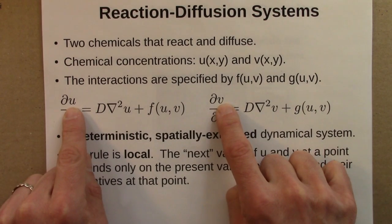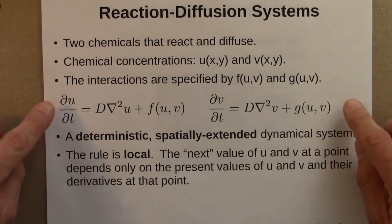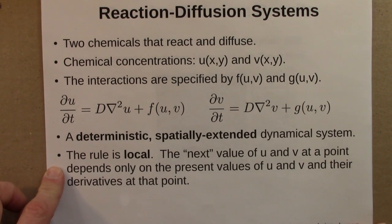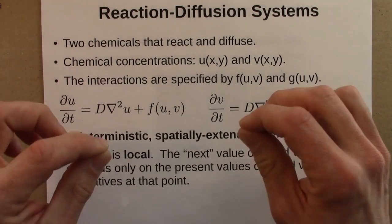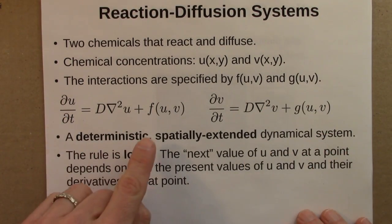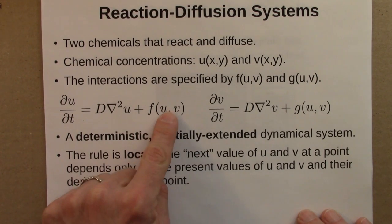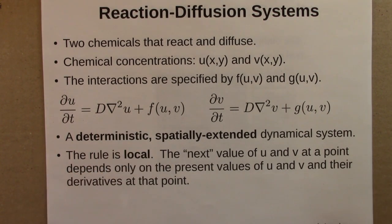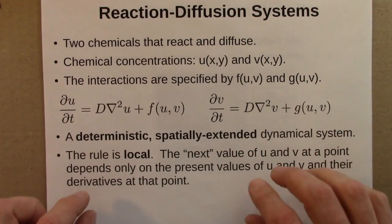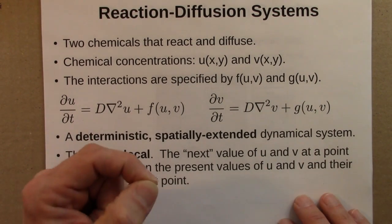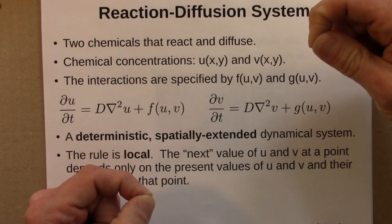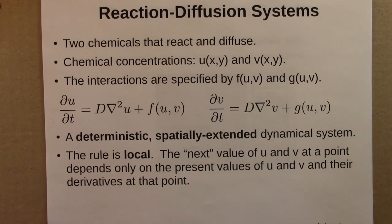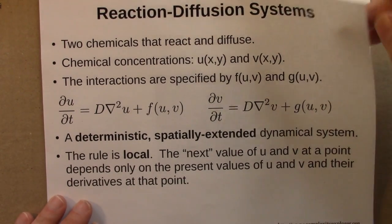Crucially, the rule is local. So, the value of u, or the value of v, those are chemical concentrations, depend on some function of the current values at that location, and on this Laplacian derivative at that location. So, we have a local rule in that the chemical concentration here doesn't know directly what the chemical concentration is here. It's just doing its own thing at its own local location. And nevertheless, it produces these large-scale structures.